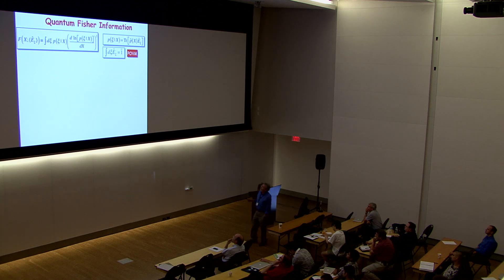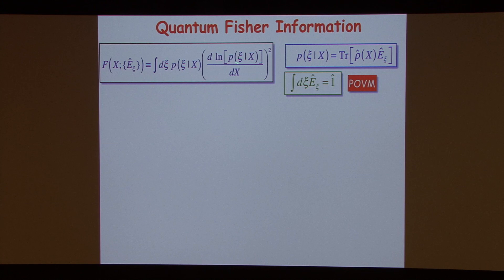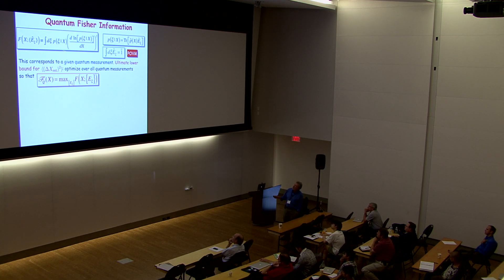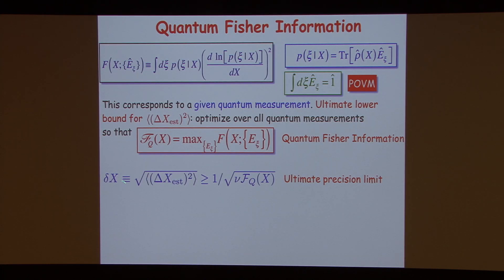Now let's go to the quantum Fisher information. For quantum mechanics, you define the Fisher information in the same way as before — it depends on the probability of getting experimental result psi if the value of the parameter is x. These probabilities can be expressed in terms of the density operator and a POVM representing the measurement on the system. To find the ultimate lower bound for this uncertainty, you have to maximize this Fisher information over all possible quantum measurements. We define the quantum Fisher information as the maximum over all possible measurements on the system, and the ultimate precision limit is then given by one over the square root of N times the quantum Fisher information.